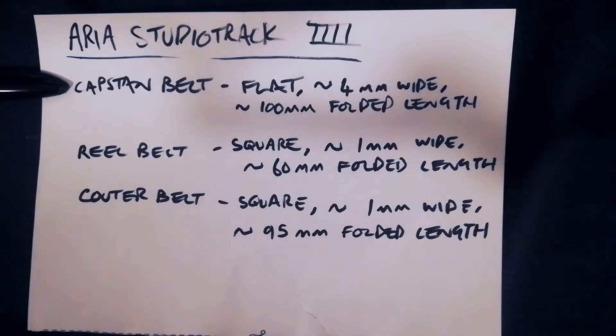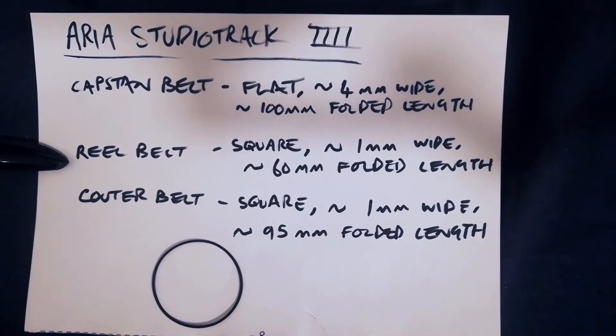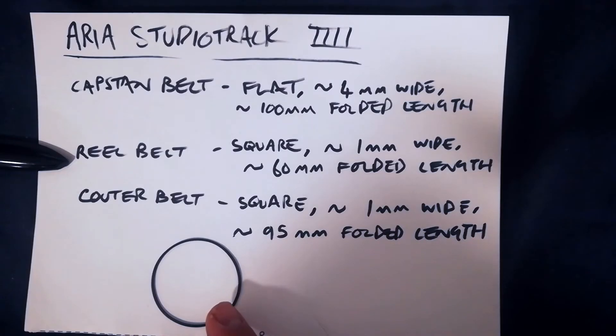Next we've got the reel belt. That's square in section, about 1mm wide, and about 60mm in folded length.